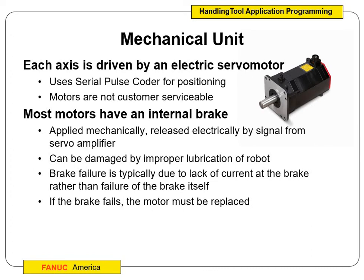Each axis is driven by an electric servo motor. For our LR Mate robots in the cages, those only have one servo per axis. Our large robot has two servos per axis — because it has a really large payload and we don't want to overwork the servos. With a servo motor we can keep track of X, Y, and Z and record those positions. Servos can hold a motor in place and have an internal brake, so we can put the robot in different positions, such as a perched position.